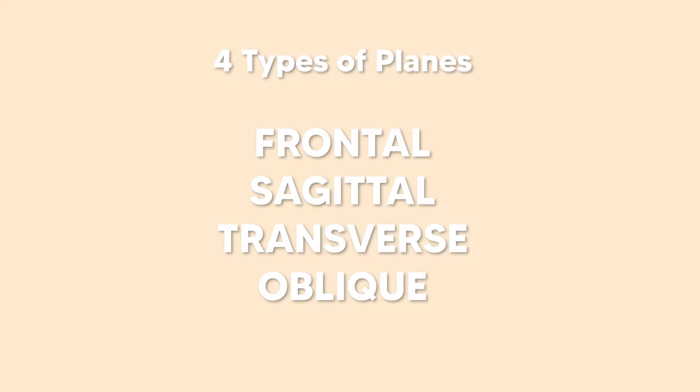So let's get into the planes and how to remember them real easy. The trick to remember how these planes intersect and divide the body is real simple. All you have to do is look at the first letter of each of the planes and they'll remind you of where they're located.